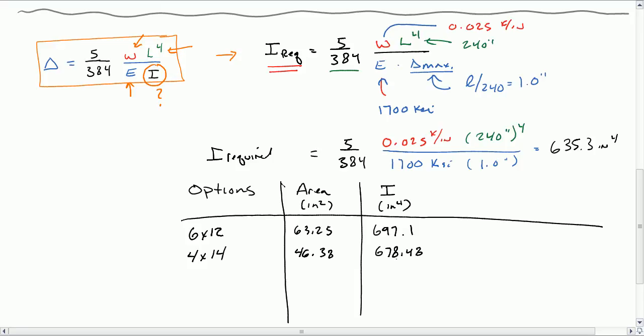And let's find one more in the table. We're trying to find moment of inertia that are just above 635. So the third option I found here is a 10 by 10. Its cross-sectional area is 90.25. It's not 100 because the 10 by 10 is the nominal size. The actual size is 9.5 by 9.5, and its moment of inertia is 678. So any of these three will work. So how do we decide which one is best?